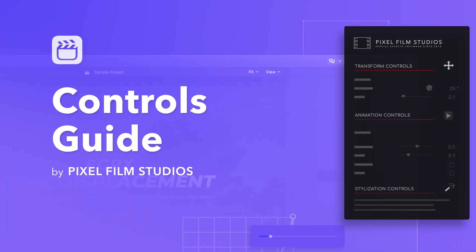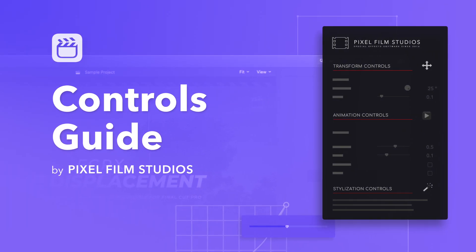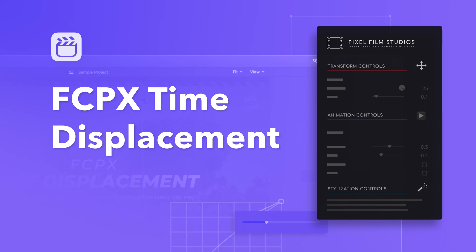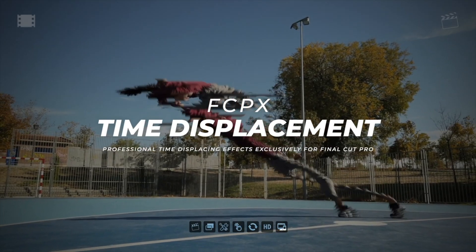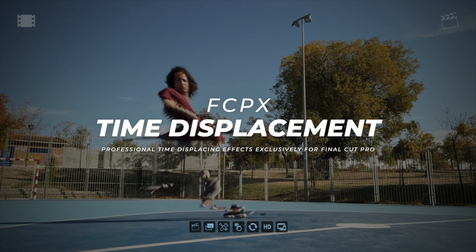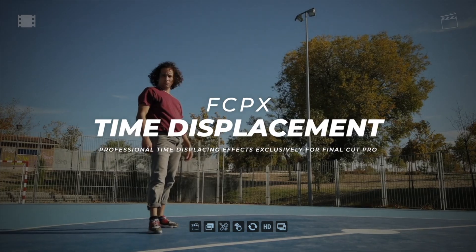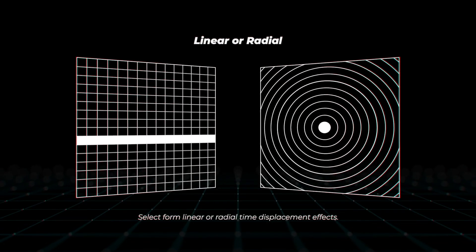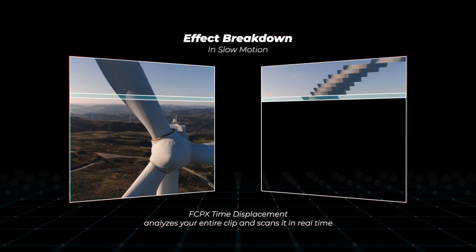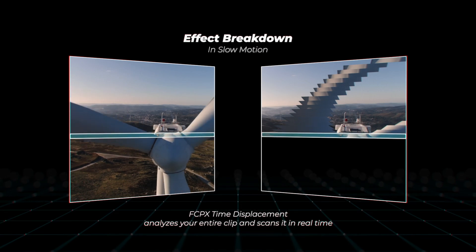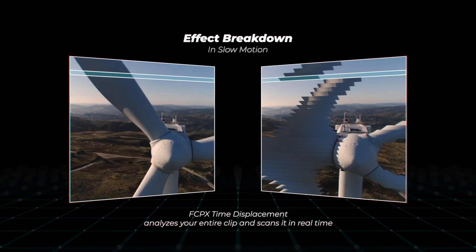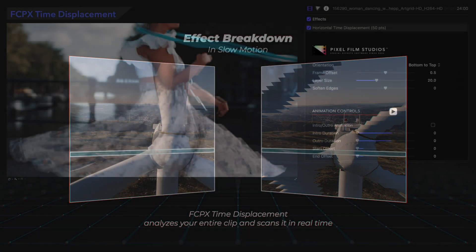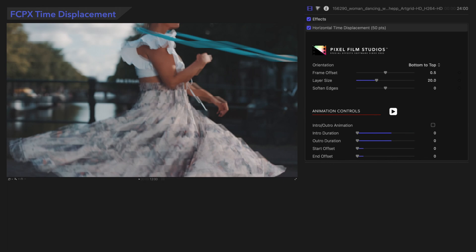Just what the doctor ordered — it's our FCPX Time Displacement Tutorial. Time Displacement gives video creators the ability to generate exciting time-warping effects. It works by analyzing your clip to create layers of time distortion in your footage. It might sound complicated, but it's easy to use no matter your skill level.